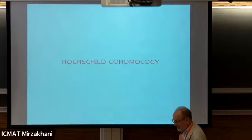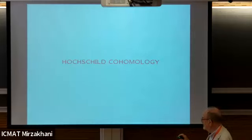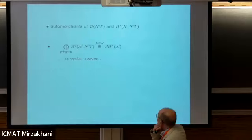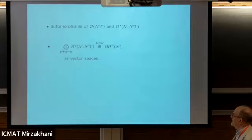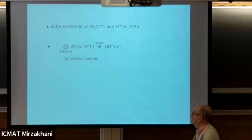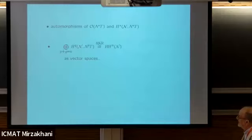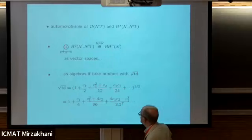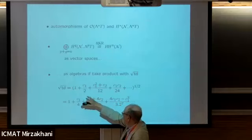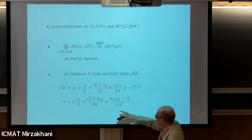What I'm using is the Hochschild-Kostant-Rosenberg isomorphism between the cohomology of the space of polyvector fields and the Hochschild cohomology. This is an isomorphism as vector spaces, but not as algebras unless we take the product with the square root of the top polynomial. So what we've got here is: one-forms, two-forms, et cetera, and then the formal square root of the Todd class gives you something like this.